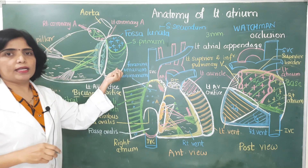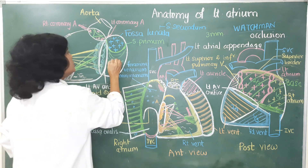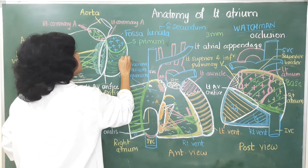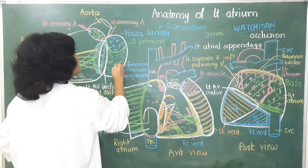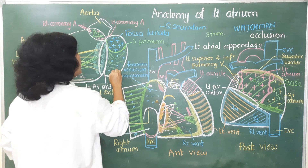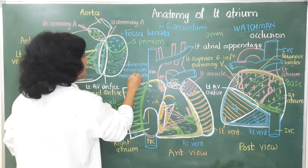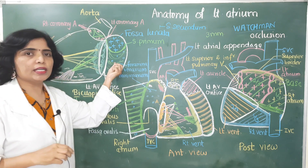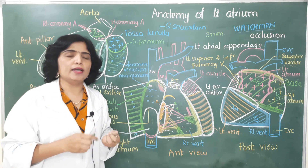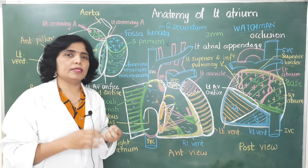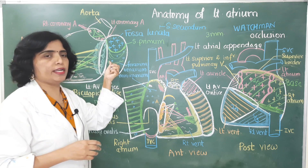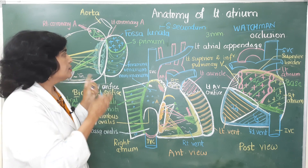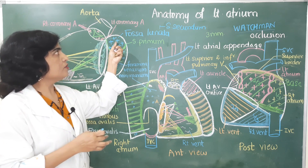The floor of the fossa lunata is derived from the septum secundum. The septal wall also shows minute openings called foramina venarum minimarum, through which small veins of the heart called venae cordis minimae open into the left atrium.